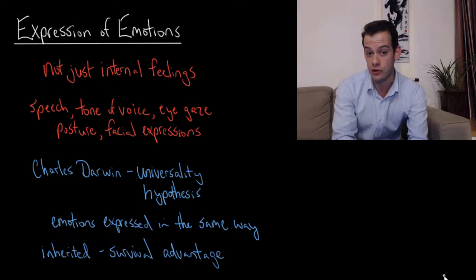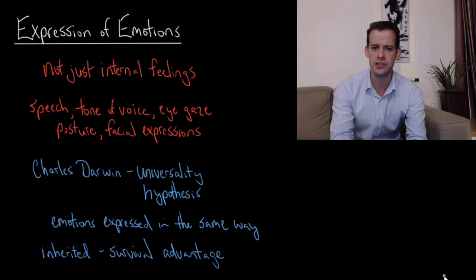It can be hard to control the expression of your emotional state in some situations. So we express our emotional state through our speech but also through our tone of voice, through our eye gaze, through our posture and most importantly for this video through our facial expressions.